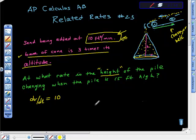The next thing I did was I started looking for rates. The first rate they gave us was that sand is being added at 10 cubic feet per minute. They also gave us some information here—I'm not sure if this was a rate or not, but I put an underline on it.